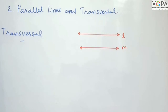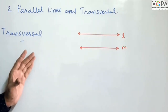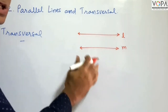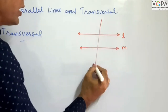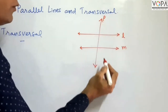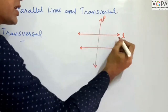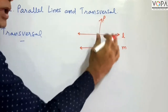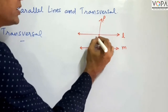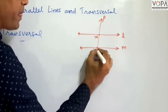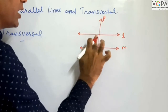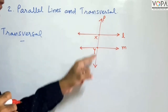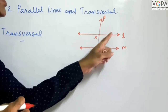Now we will understand what is a transversal line. Look at this diagram: Line L and Line M are two distinct lines. Line P is intersecting lines L and M in two distinct points — suppose the points are X and Y. So line P is intersecting lines L and M at points X and Y, and therefore this line P is called the transversal line of lines L and M.